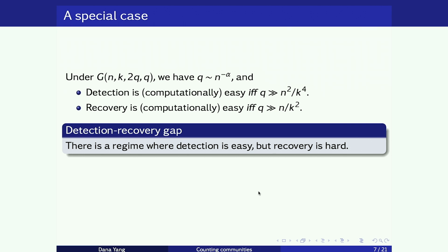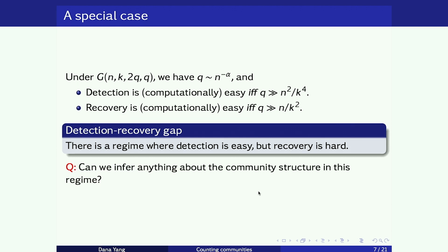With that preface, we move to what we actually want to talk about. The existence of this detection-recovery gap leads us to think about a natural next question: in this middle-ground regime where detection is easy but recovery is hard, can you shoot for lower-hanging fruit? You cannot recover all the members of the community, but can you infer something about the planted community structure without recovering all of them?